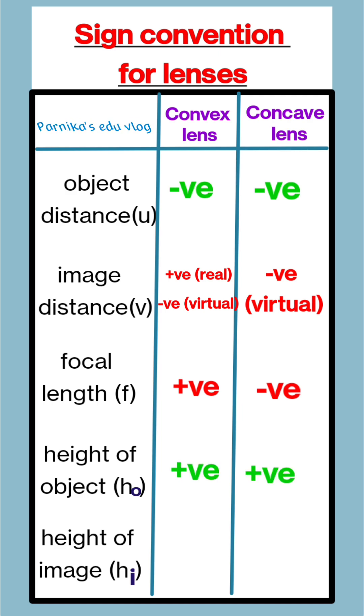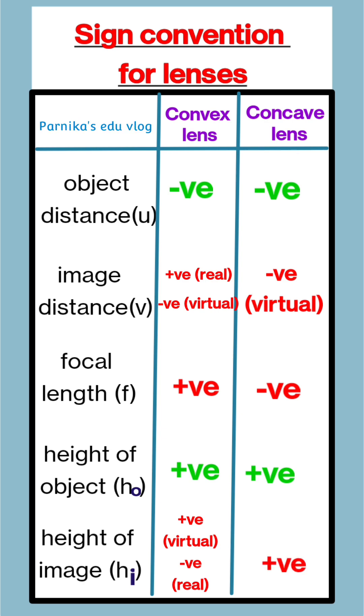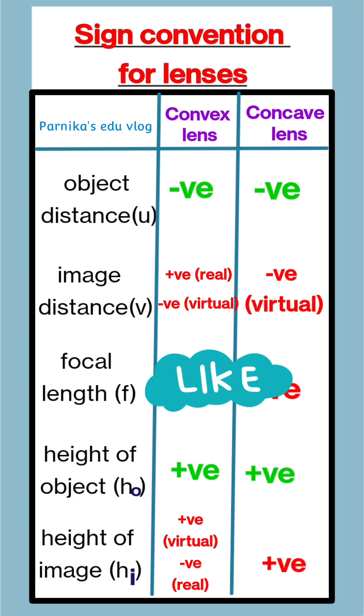Height of image hi is positive for virtual images and negative for real images, and here for the concave lens it is positive as images are virtual.